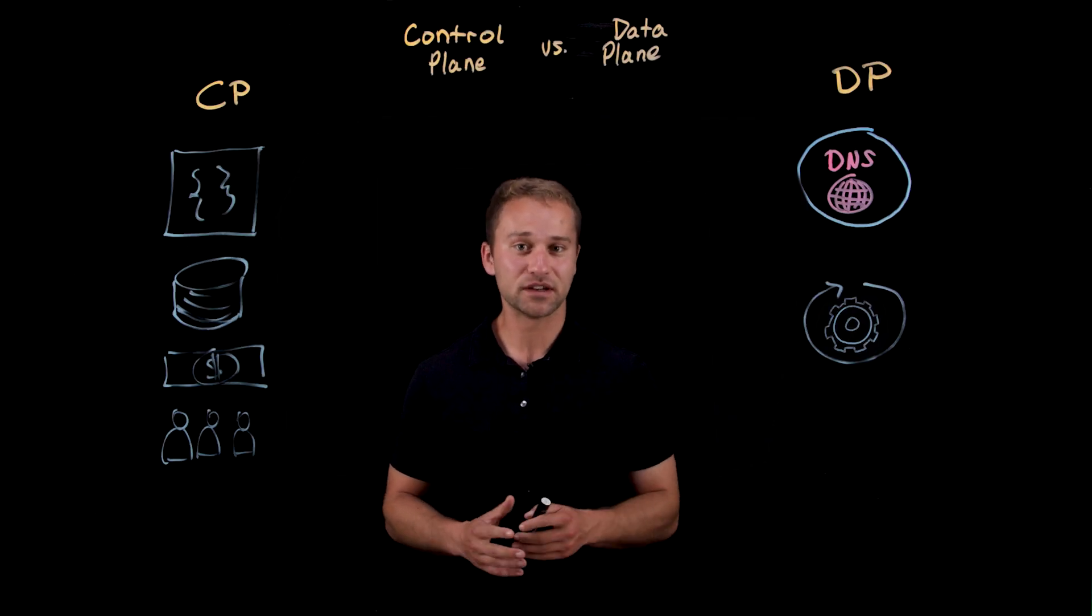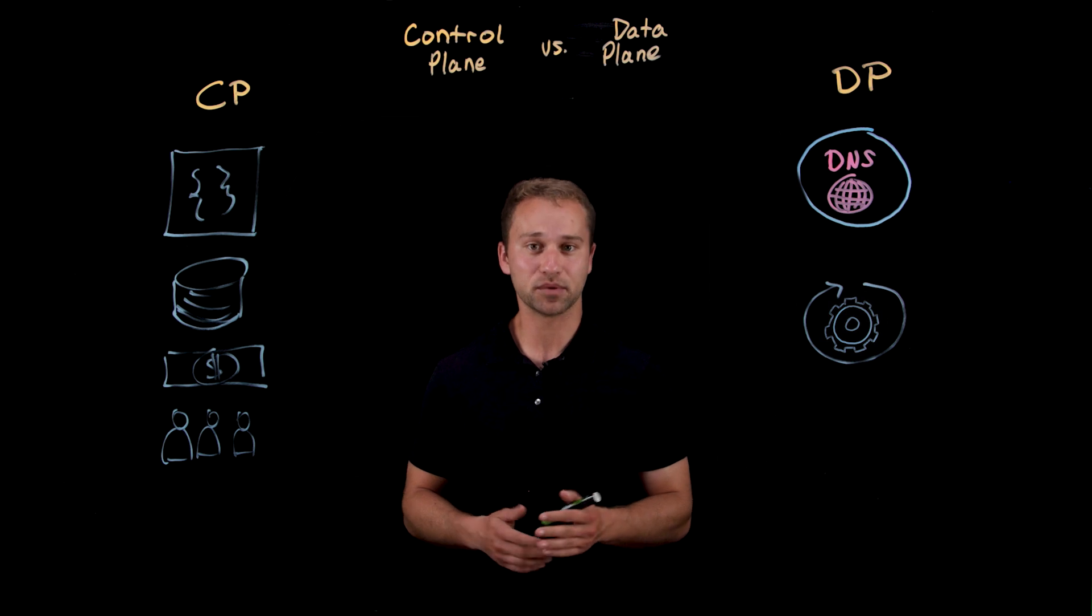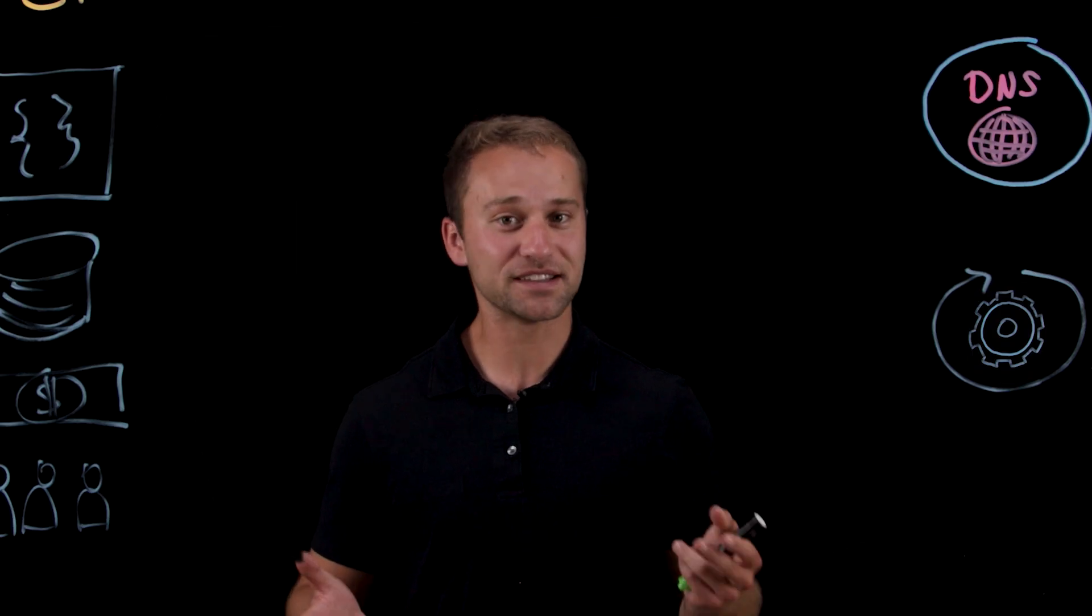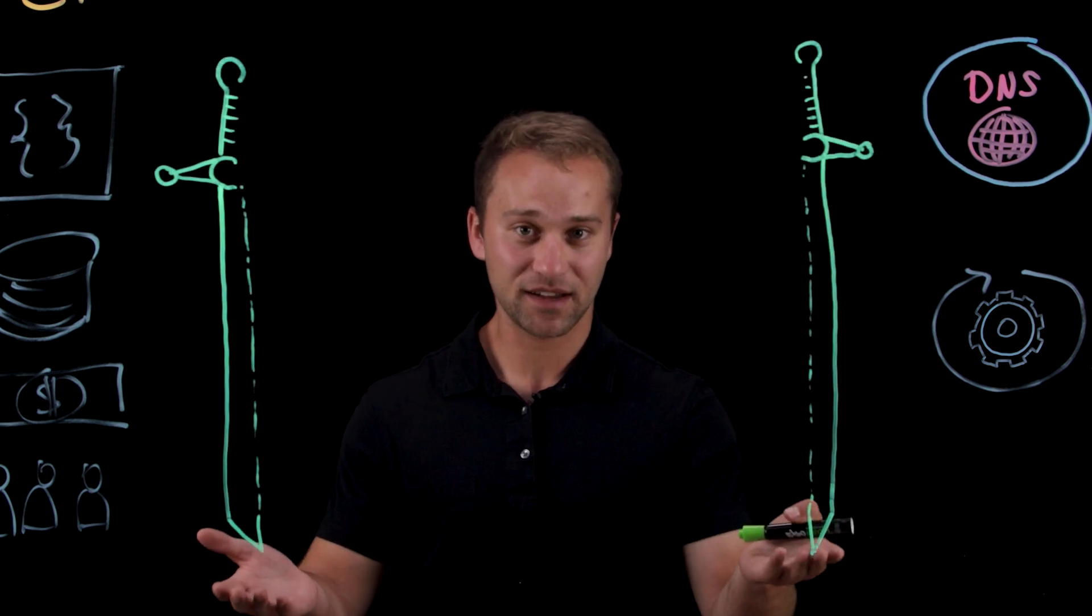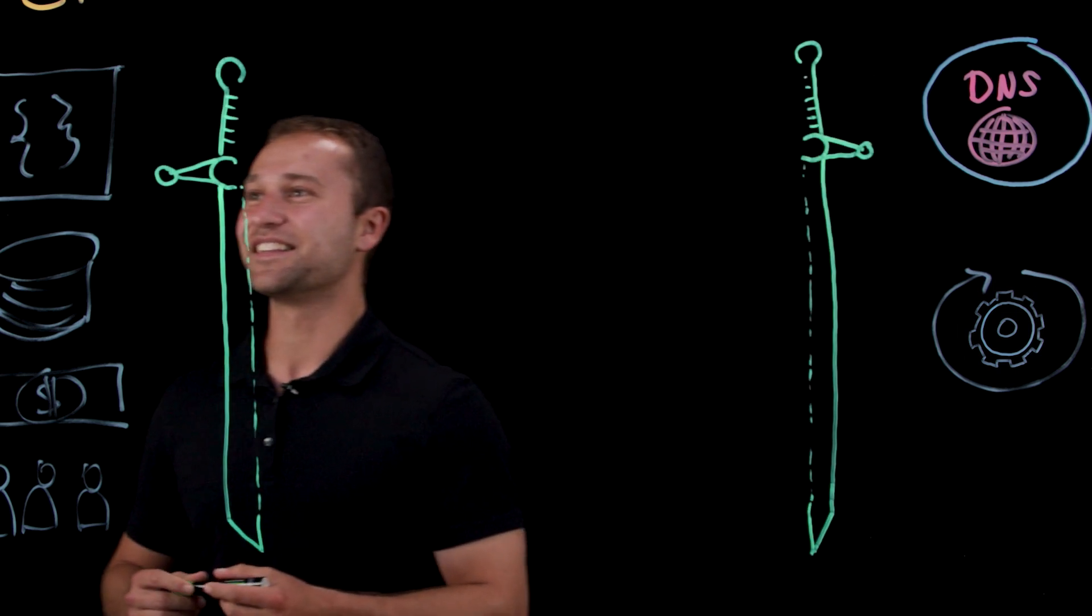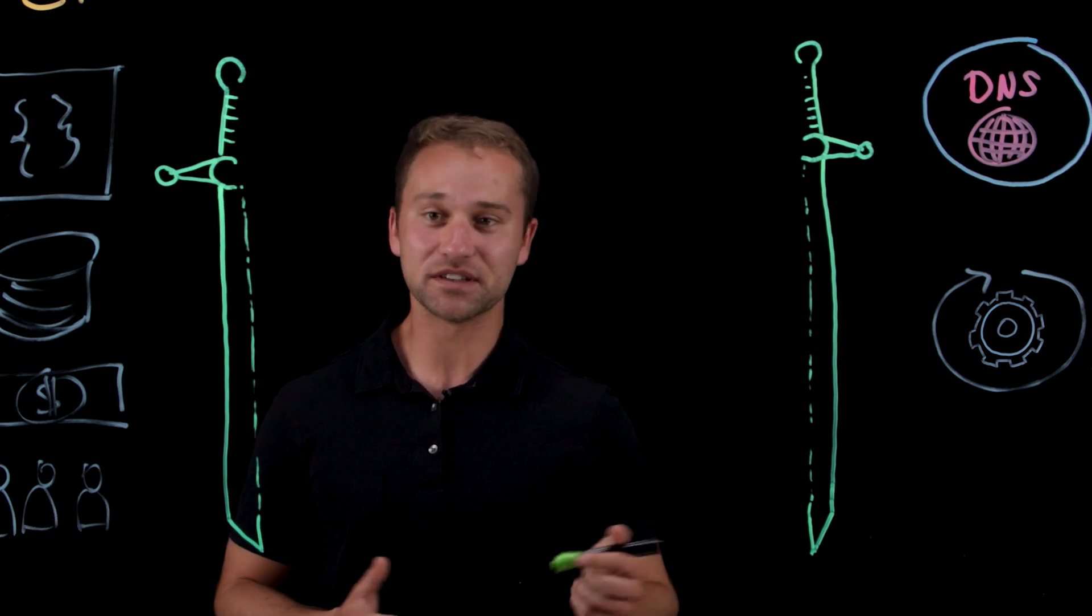So, we just worked through three different examples on both the networking platform side of things as well as the storage platform. There are some advantages and disadvantages that are going to arise from applying the control plane, data plane, system architecture design principles to your platform, and you might consider these as somewhat of a double-edged sword. Let's talk about some of those advantages that we saw as common themes through each of these examples.